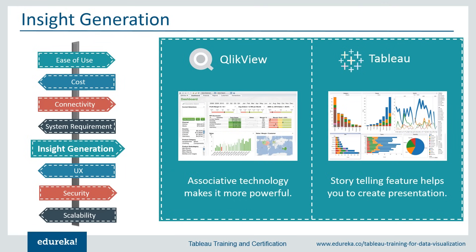Let's move on to insight generation. Most people use these tools for this specific purpose. QlikView's associative technology makes it more powerful and helps read associations between variables easily, sometimes helping businesses understand hidden relations between data points. For Tableau, the storytelling feature helps create a presentation using your available data points. If this were a beauty contest, Tableau would definitely win.